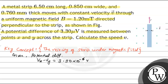We know that for a free charge Q inside the metal strip with velocity V, we have force F equal to Q·E plus Q·V cross B.